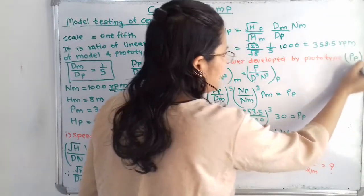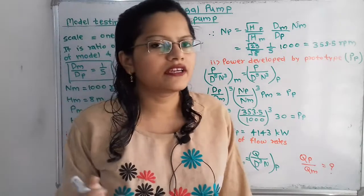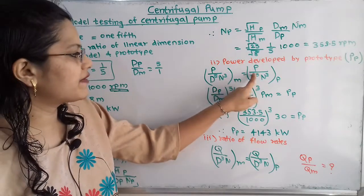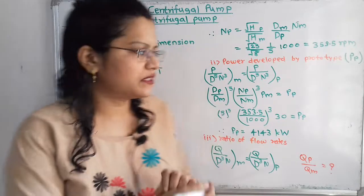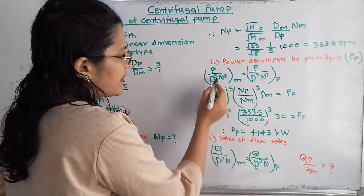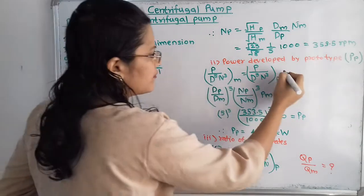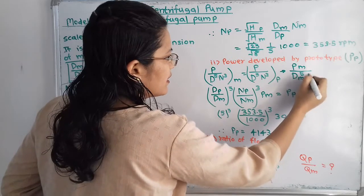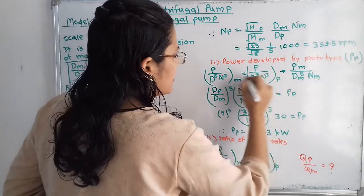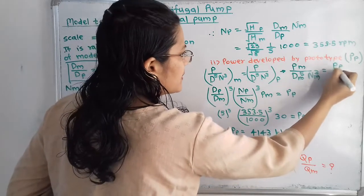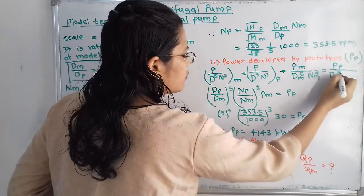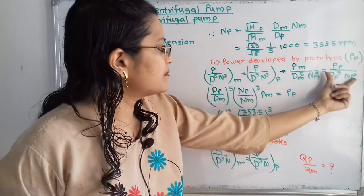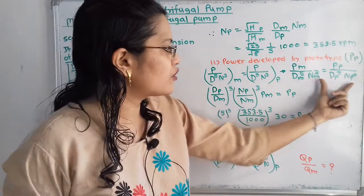The next question is to find the power required to drive the prototype, P_p. The formula in terms of power is: P / (D⁵ · N³) of model = P / (D⁵ · N³) of prototype. Splitting this: P_m / (D_m⁵ · N_m³) = P_p / (D_p⁵ · N_p³). We now solve for P_p.